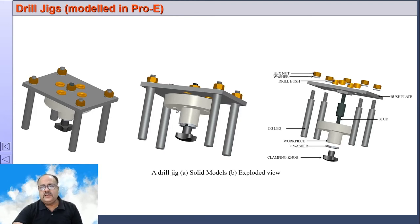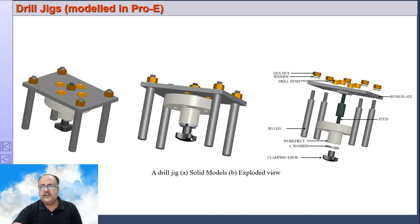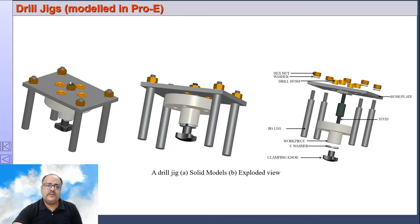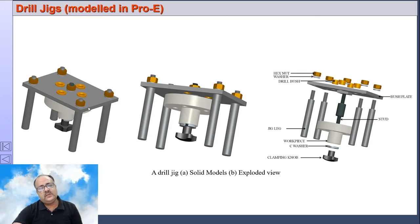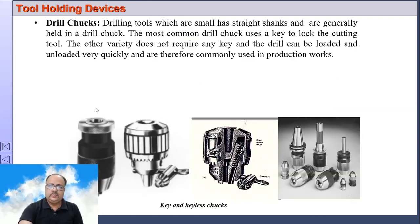Here is another drill jig for a flange-type component where four holes are to be drilled on a particular pitch circle diameter. There is a central spindle in which the work is fitted and clamped with a washer and knob. On top there are four bushes. This particular jig is called a table jig — it has four legs, is placed on the table, and the operator simply has to guide the tool through these holes.